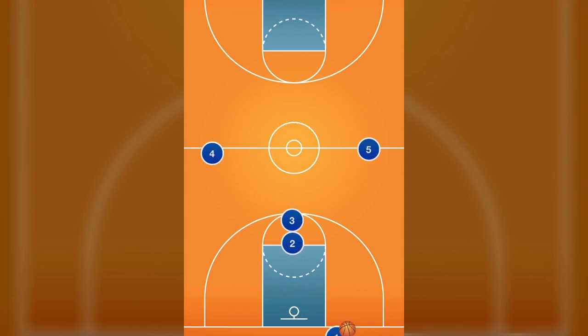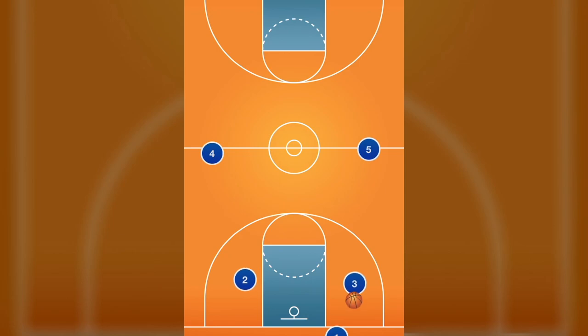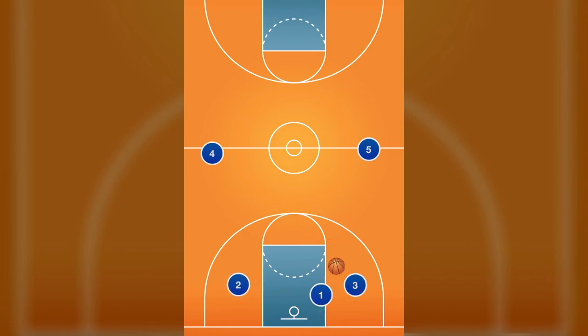Let's watch Laker option 1 again. Player 2 sets a screen, then inbound the ball. Pass back to the inbounder and fill the lanes of the court.